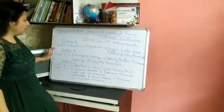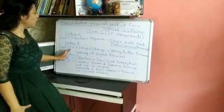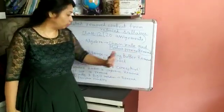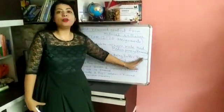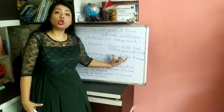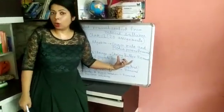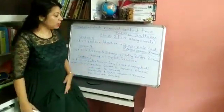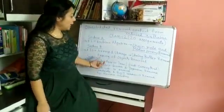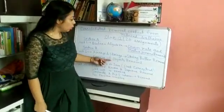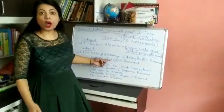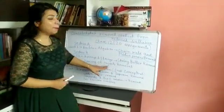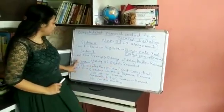Then come to section B. In section B, from unit 10 — arrays and string — string buffer has been removed. Only one small topic from this string chapter has been removed, not the whole string chapter — only string buffer. Then, passing of objects has also been removed. One program generally came in your ICSC for passing of objects, but it has been removed now.